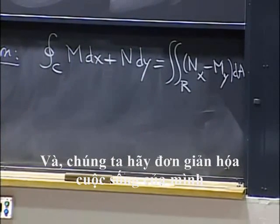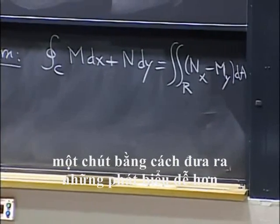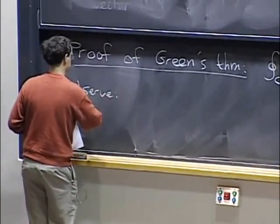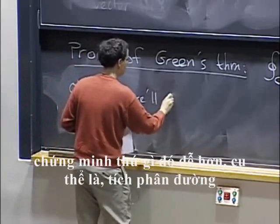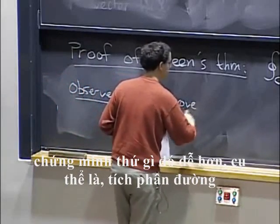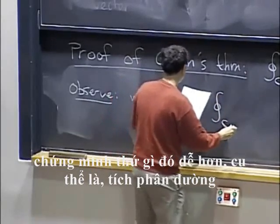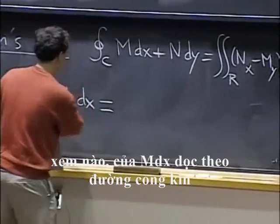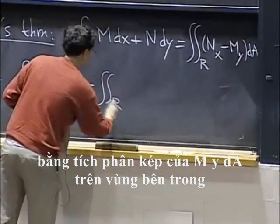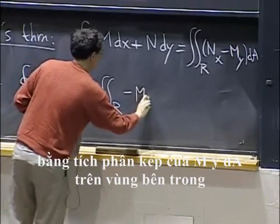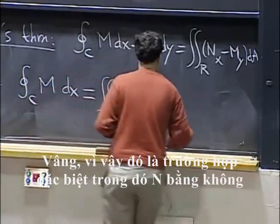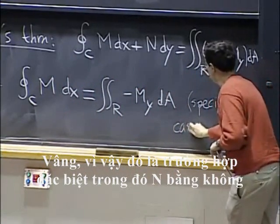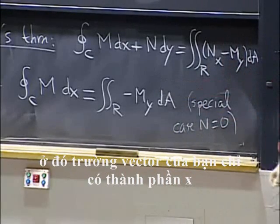Let's simplify our lives a bit by proving easier statements. The first observation: we'll actually prove something easier, namely that the line integral of M dx along the closed curve is equal to the double integral over the region inside of minus M_y dA. That's the special case where N is zero, where you have only an x-component for your vector field.